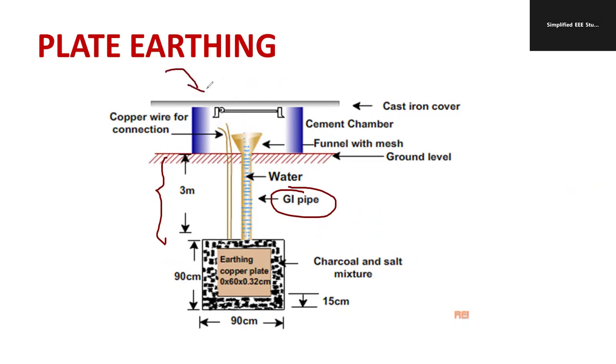Here there is a civil construction. As you can observe, it's a cement chamber, a concreted segment. Also the cover is made up of cast iron. So these are the basic observations of plate earthing.